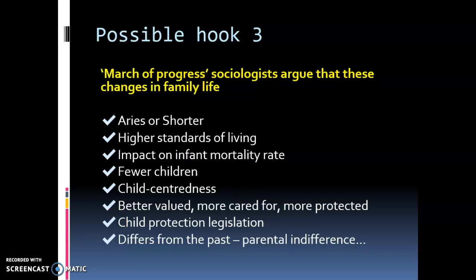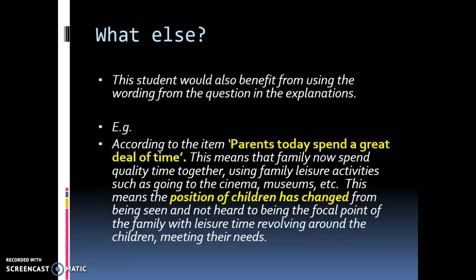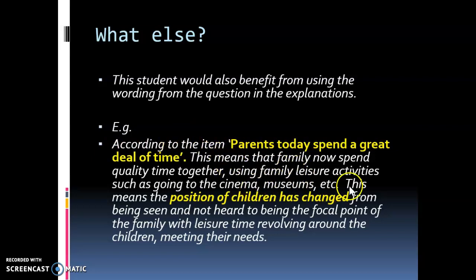Remember, we've gone through three possible hooks here, but you only have to write about two of them — choose the two that you have the most knowledge about. A further tip to showcase AO2 skills is to make it clear that you are applying your answer to the question set. Use the wording from the question in your explanations — as well as using the item and making it really obvious — include a sentence that says 'this means the position of children has changed because...', which is exactly what the question is asking for.